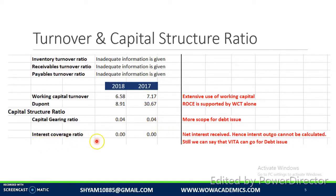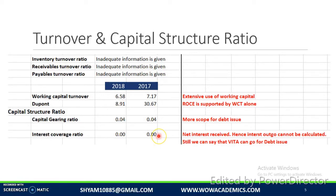Looking at the interest coverage ratio, we cannot compute it because the interest coverage ratio is PBIT divided by interest paid. But the profit and loss statement shows only interest received — there is no net interest being paid. So this ratio cannot be calculated. Even so, since interest outgo cannot be calculated, we can still say that VITA can go for a debt issue. Both these ratios indicate that the company can go for a debt issue.